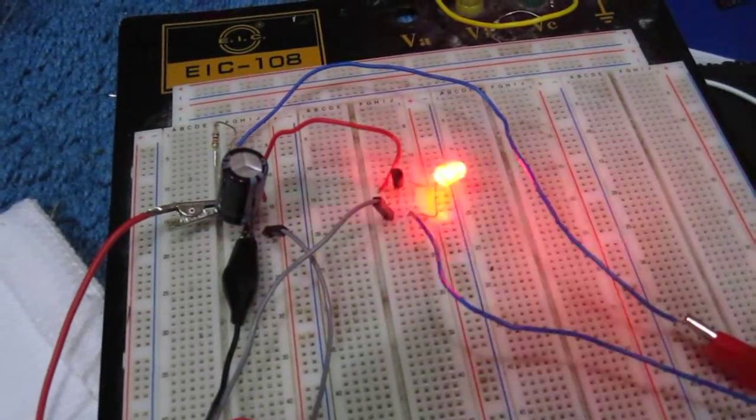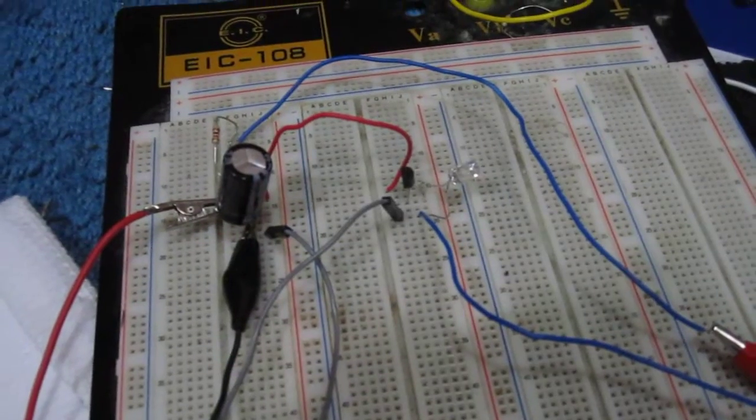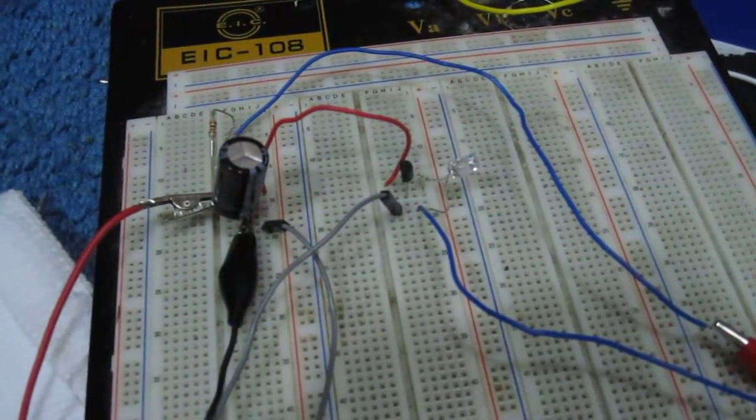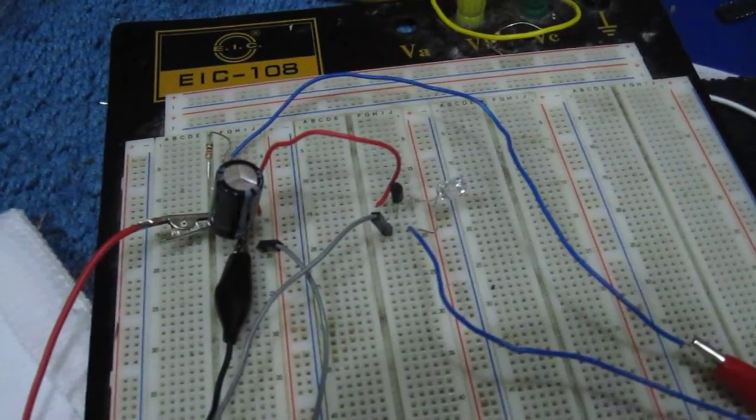Hey guys, this is a relaxation oscillator circuit built using a single NPN transistor. The transistor I'm using is a 2N4401 NPN transistor.